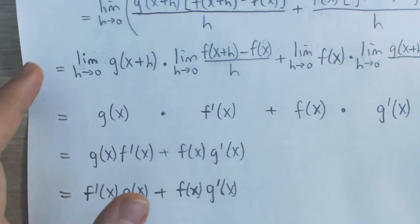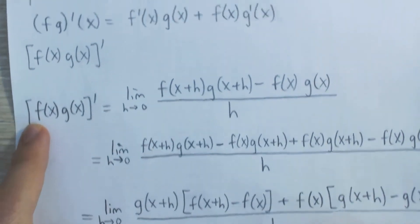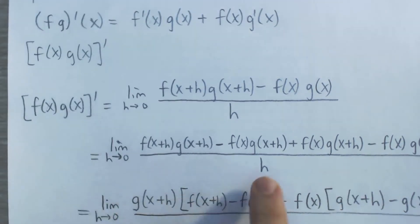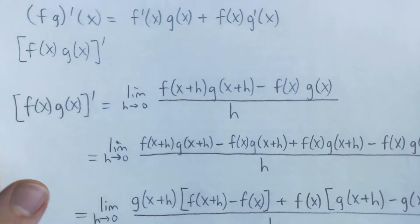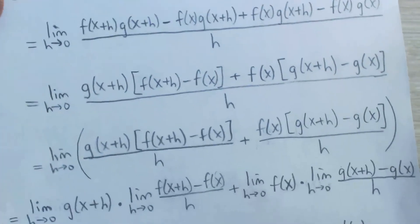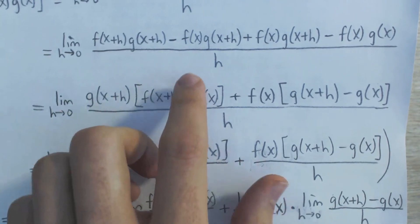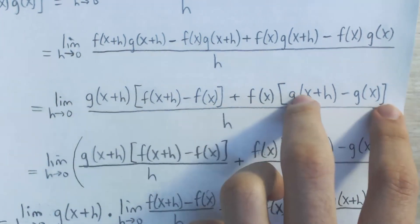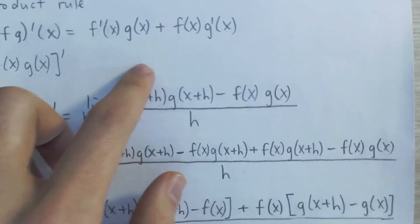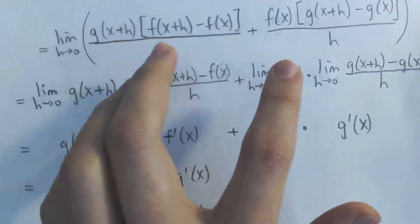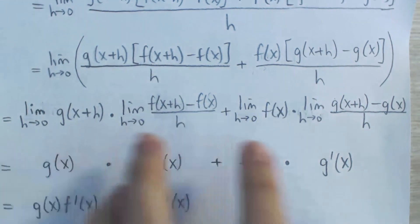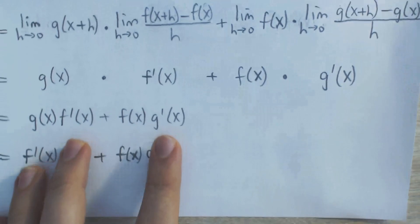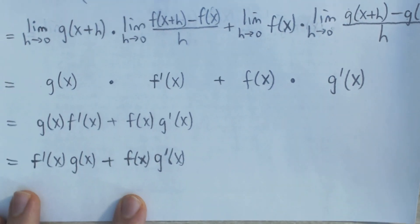So what did we do here? We used the limit definition of the derivative for the product of two functions. We added and subtracted the same thing — not very intuitive, but it helps in this proof. It allowed us to factor out certain terms to get the numerator of the derivative of f and g, which we want in our final answer. We used the sum rule for limits and the product rule for limits, then simplified to get those derivatives. And that's the product rule proven.